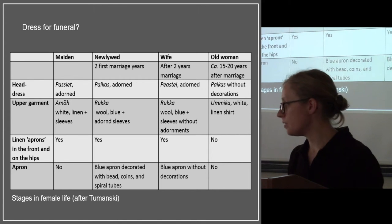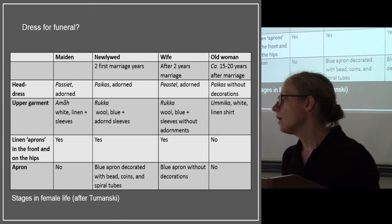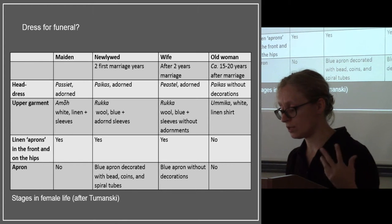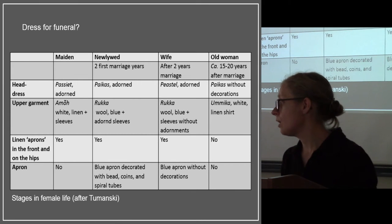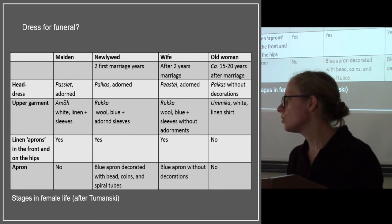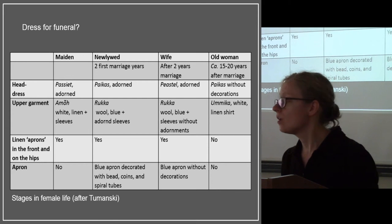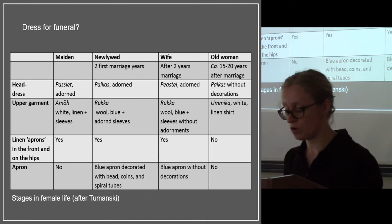Another important period was after marriage, when the woman was a newlywed. This was the richest period considering clothing, and most ornamental jewelry was worn in this period. An important period is also when she was a mature wife. But when she got old and became an old woman, she divested herself of most jewelry and also most of the other clothing elements.